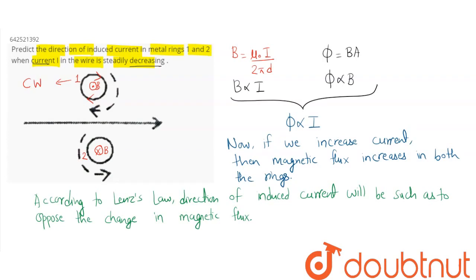And in a similar manner, we can see in ring 2, magnetic flux increases inwards, which means that the current in ring 2 must be in the anticlockwise direction. So in the second ring, current must be in the anticlockwise direction.